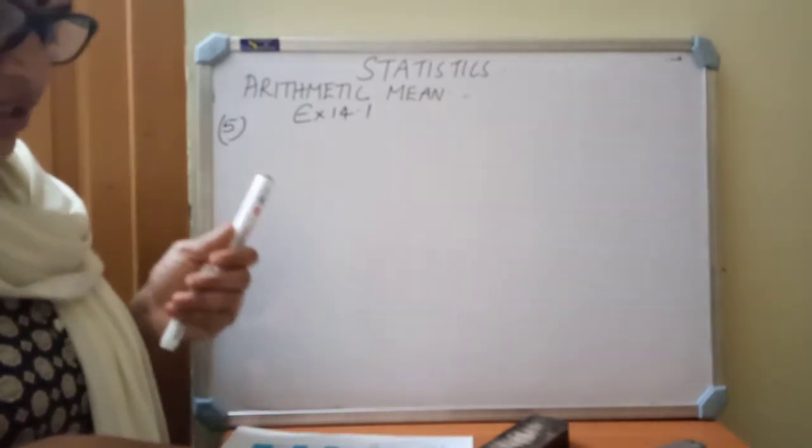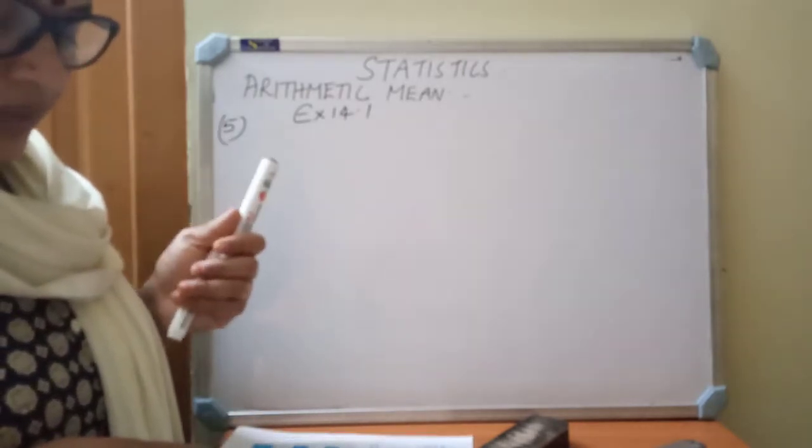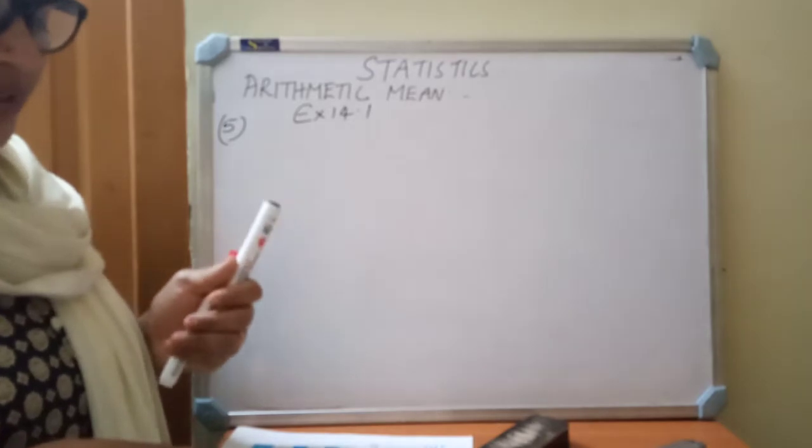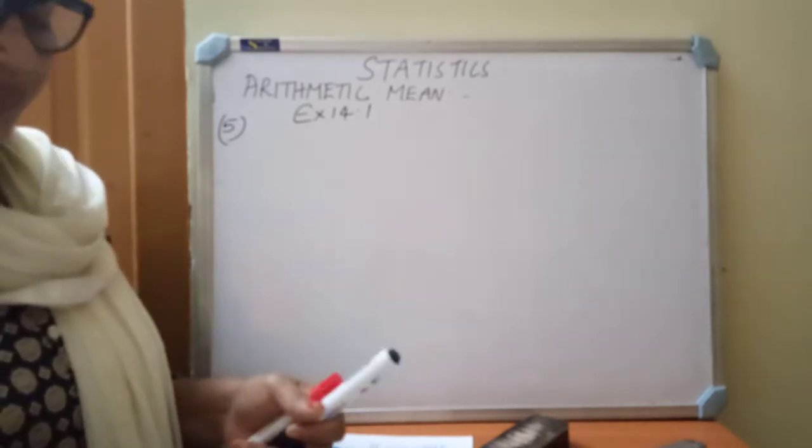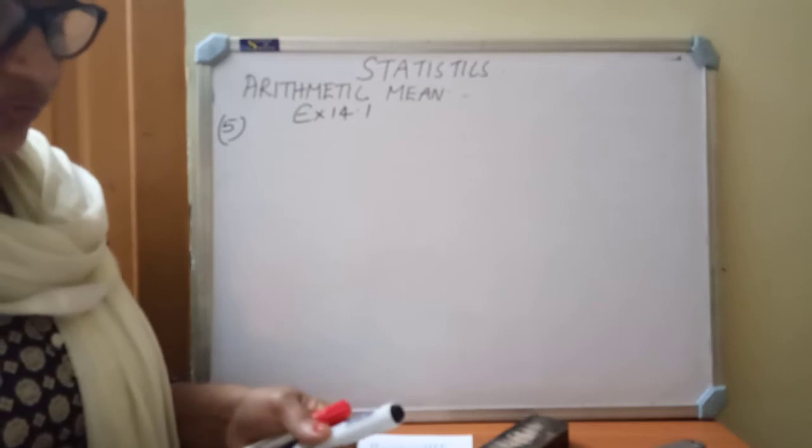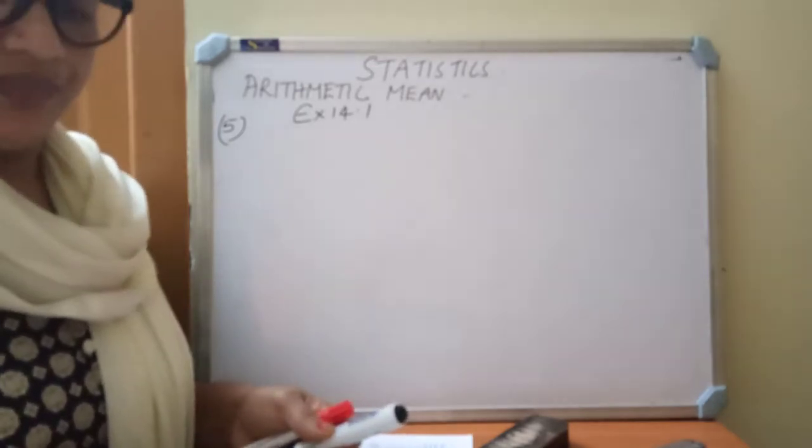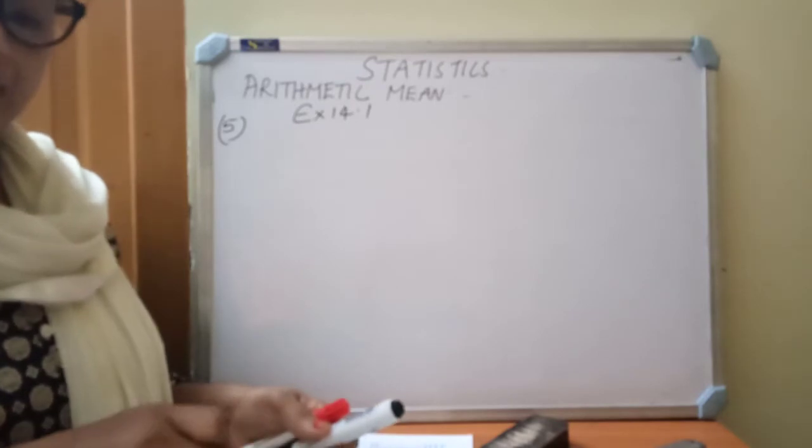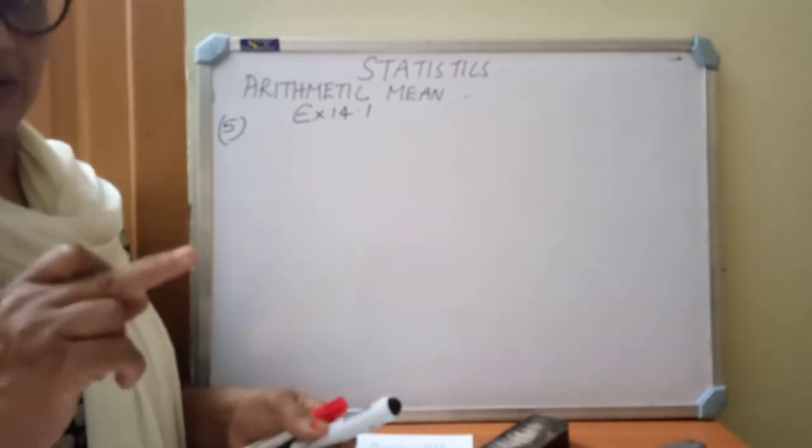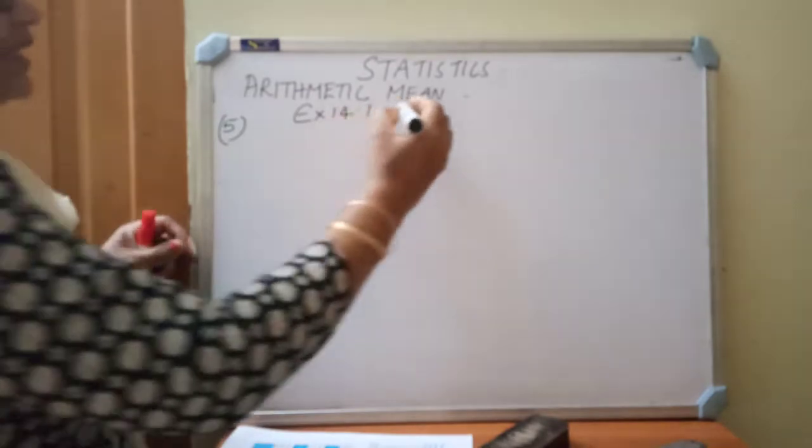They are given number of mangoes as class interval and number of boxes as frequency. They ask you to find out the mean number of mangoes kept in a packing box. For finding the arithmetic mean, first you must see the class intervals. The class intervals here are 50 to 52, and the next class is starting with 53. So the given series is an inclusive series.